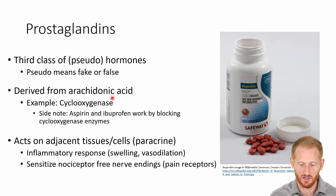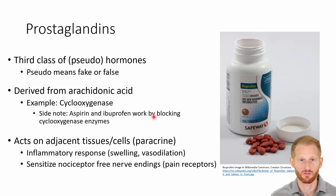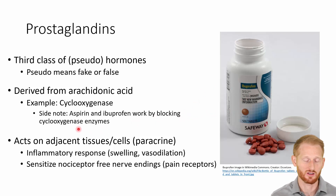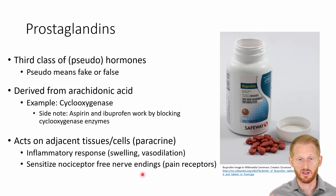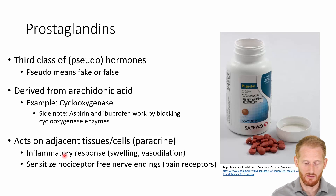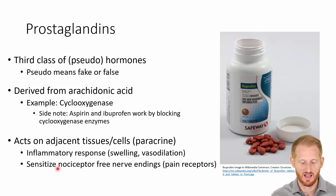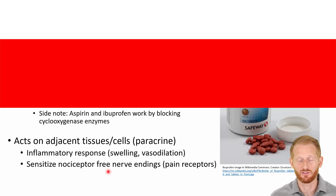Prostaglandins are derived from arachidonic acid. An example of a prostaglandin is cyclooxygenase, and a real-world interaction we have with cyclooxygenase is drugs like aspirin and ibuprofen, which work to block its enzymes. Prostaglandins are paracrine — they are released from one cell and typically act on neighboring cells rather than floating through the bloodstream body-wide. They are released when a cell is damaged or when there's illness or infection, and they initiate the inflammatory response: swelling, vasodilation, and sensitization of nociceptors, which are the neurons responsible for sensing pain.